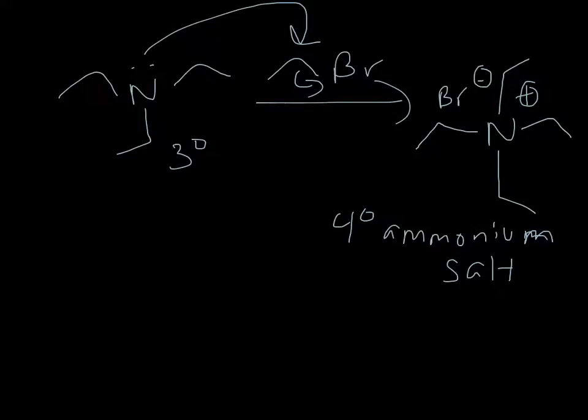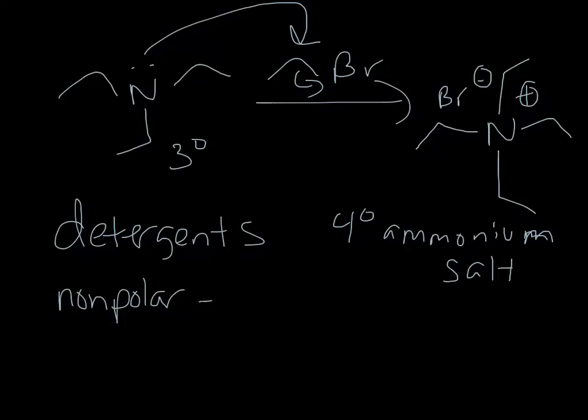So these types of species are sometimes used as detergents. Ammonium salts like this have a nonpolar aspect to them because they have this alkyl group. So species that are nonpolar, like oils, if you've got a stain in a shirt for example, the nonpolar aspect of that would be able to dissolve that oil out.